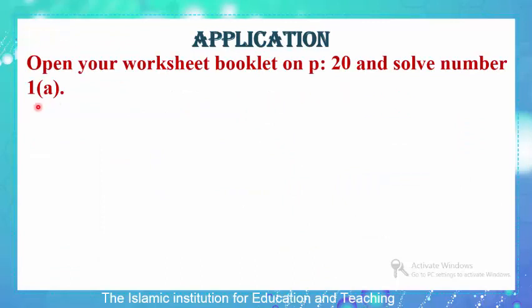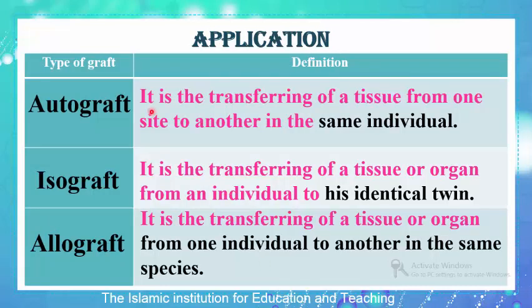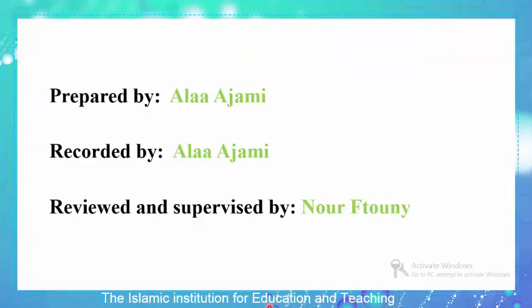Now we can sum up the different types of grafts. Autograft: transferring of a tissue from one place to another in the same individual — no transferring of organs in this type. Isograft: transferring of a tissue or organ from one individual to their identical twin — meaning exactly the same in appearance. Allograft: transferring of a tissue or organ from one individual to another in the same species. In the next video we will learn why in some cases grafts are rejected. Thank you for your attention and goodbye.